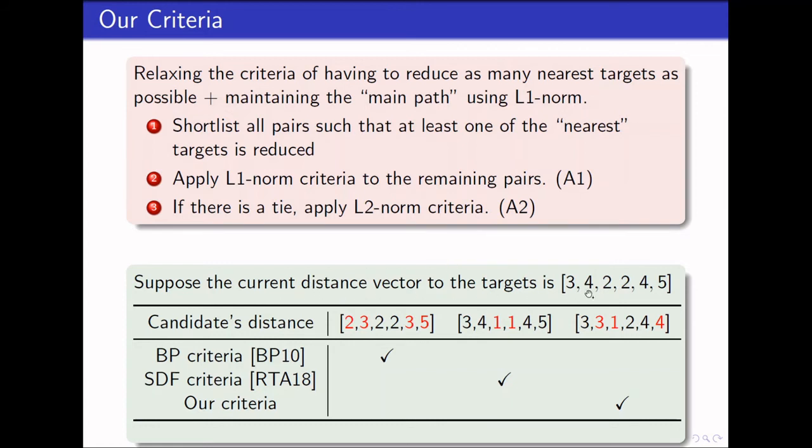Over here is the example from the previous slide. So again, let's say now we still have the distance vector of 342245, and now we have a new candidate which is 331244. Now, comparing this to the first element, we can see that it only reduces three of the roles. Therefore, BP will favor the first one over the third candidate. Comparing to the second candidate, it only reduced one of the two nearest targets, namely row 3 and row 4, and it only reduces row 3. Therefore, the SDF criteria will favor the second candidate over the third one. However, this is the middle point that our criteria wants to choose.